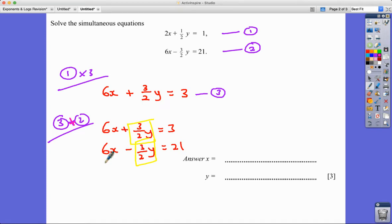One's positive, one's negative. If I add, so I'm going to get 6X plus 6X which equals 12X. Those things are going to cancel each other out.